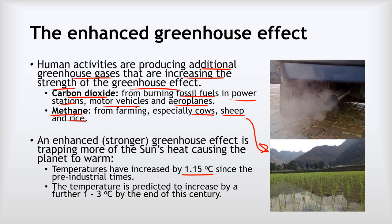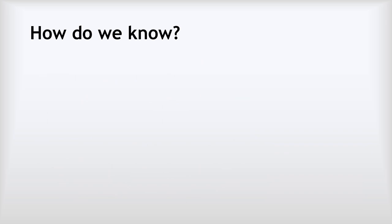Our best predictions — though it's hard to predict because there are many factors — are that we'll see a further one to three degrees celsius of warming by the end of this century. This is likely to have very significant effects on all parts of the earth system, which is why combating climate change is such an important issue. So how do we know the temperature has been changing and that it is our fault?